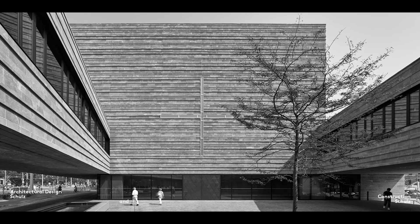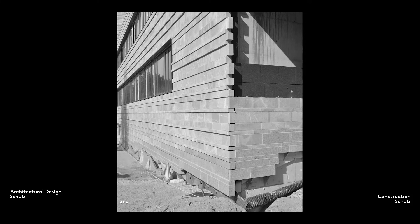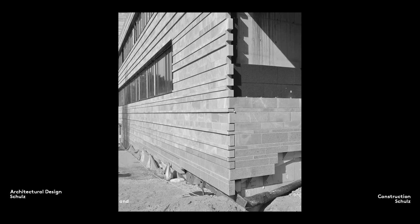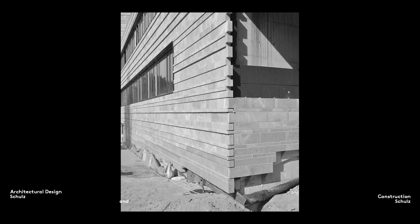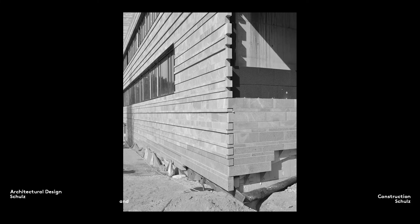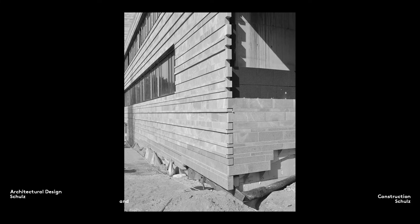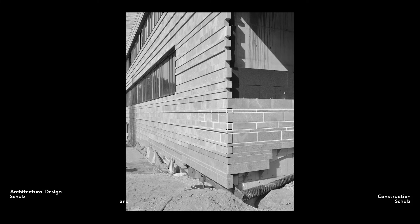Now that we have defined space, let's take a look at the notion of construction. Construction refers to the joining together of components, seen in terms of process, or to the structure they form, seen in terms of outcome. Components are assembled into constructions. Bricks and stones are laid one on top of another to form walls, glass is used in windows, tiles are laid on floors. These are all forms of construction.